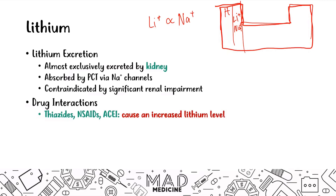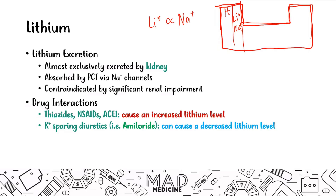Another drug you need to know is potassium-sparing diuretics, like amiloride — these can cause a decreased level of lithium. So with thiazides, you're going to have increased levels; with potassium-sparing drugs, decreased levels; and with loop diuretics, a varying effect that can lead to either increased or decreased levels. Just know you need to watch out for drug-to-drug interactions when patients are taking lithium.